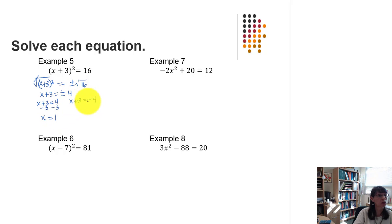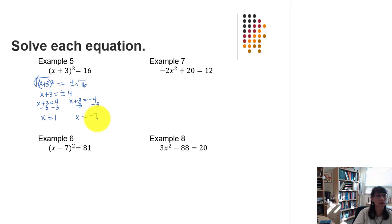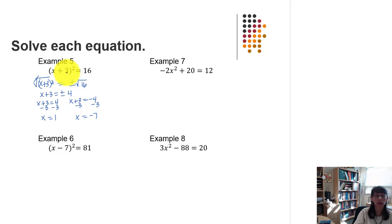In the other equation, subtracting 3 from each side again gives x equals negative 7. You can substitute these values back into the original equation to make sure they work.